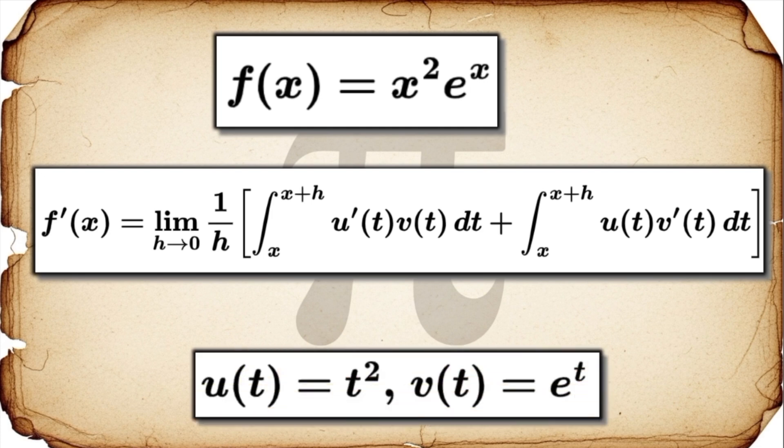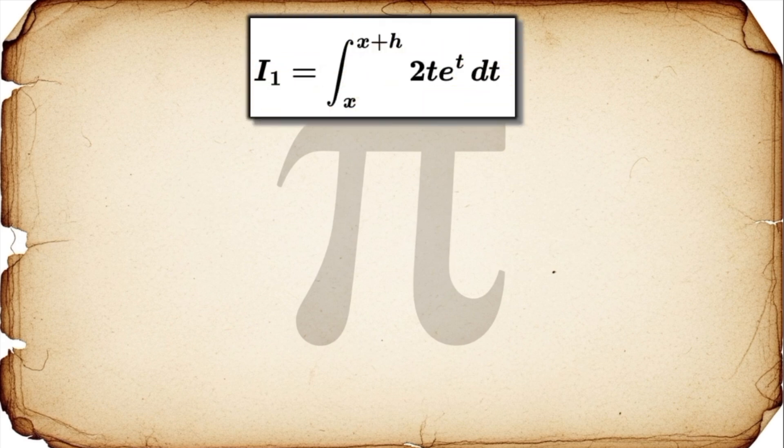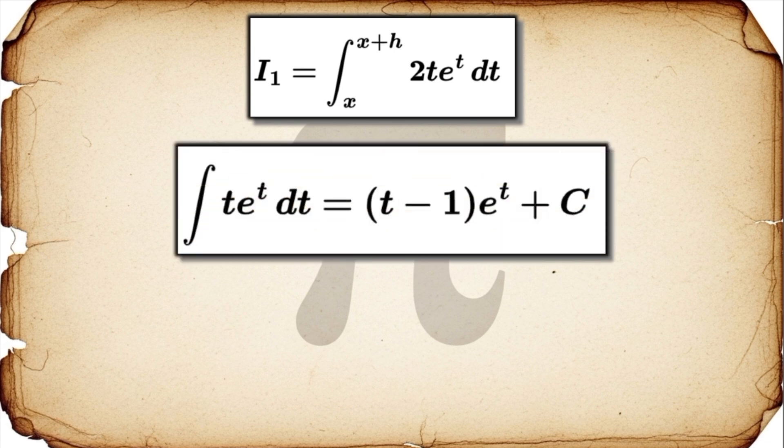Okay, first up is that first integral, which is for the u'v term. For us, that's the integral from x to x plus h of 2t times e to the t. To solve this, we use the standard technique of integration by parts. And after a little bit of work, we get the expression you see on the screen.